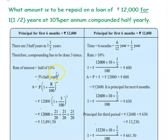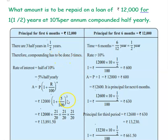The rate of interest will be half of 10%, so it will be 5% half yearly. We know that Amount = P into (1 + R/100)^N. The principal is 12,000, rate becomes 5 divided by 100, and N is 3. Substituting and simplifying: (100 + 5)/100 = 105/100 = 21/20. So, 12,000 into (21/20)^3, which is 21/20 into 21/20 into 21/20. Simplifying, you will get the amount as Rs. 13,891.50.